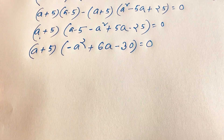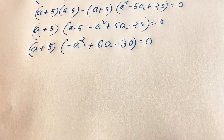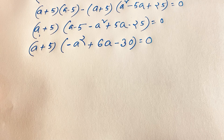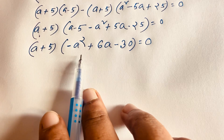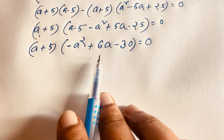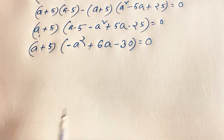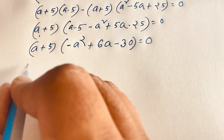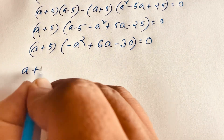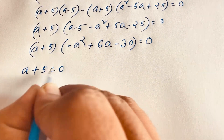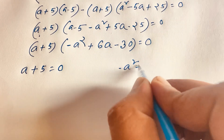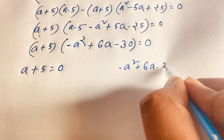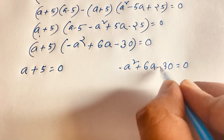So we find out here are two equations. Our first equation is a plus 5 equals 0, and our other equation is a quadratic equation: minus a squared plus 6a minus 30 is equal to 0.